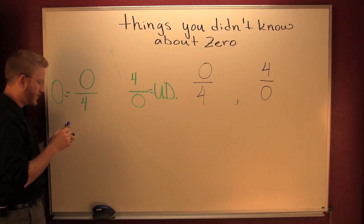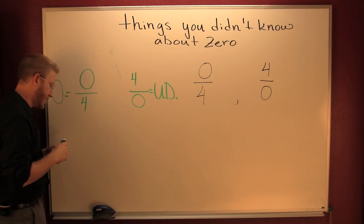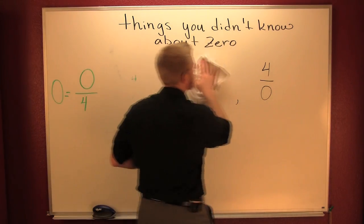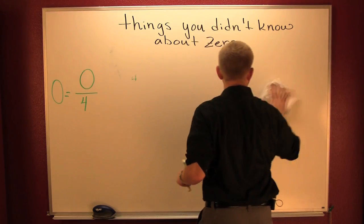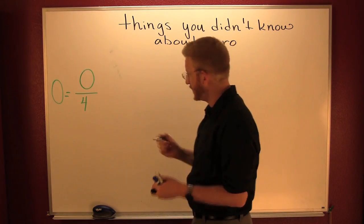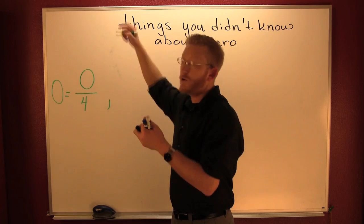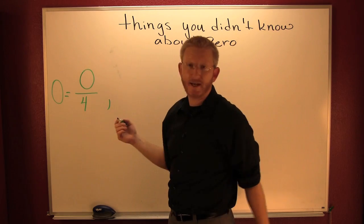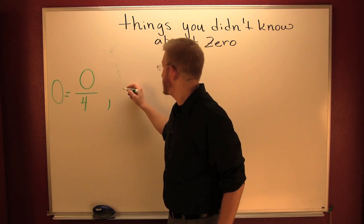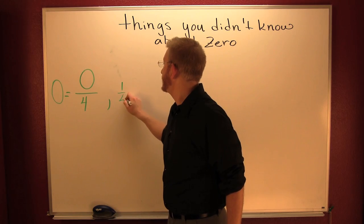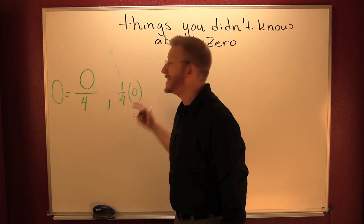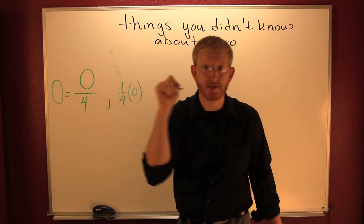Perhaps you were wondering why it's zero. You can re-see that quotient — zero over four — as one-fourth times zero. Any number times zero is zero.